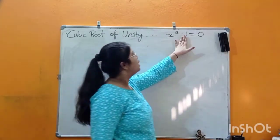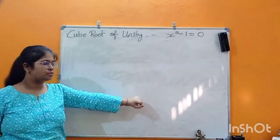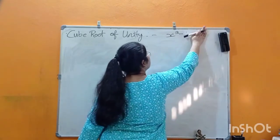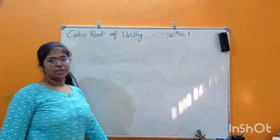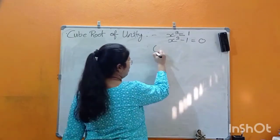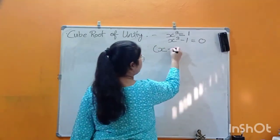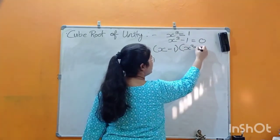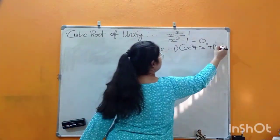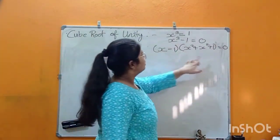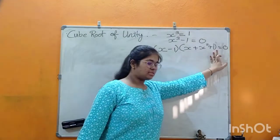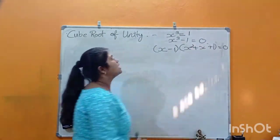If x³ = 1, we can write x³ − 1 = 0, which factors as (x − 1)(x² + x + 1) = 0. So either x − 1 = 0 or x² + x + 1 = 0. To solve x² + x + 1 = 0, we apply the quadratic formula: x = (−b ± √(b²−4ac)) / 2a.